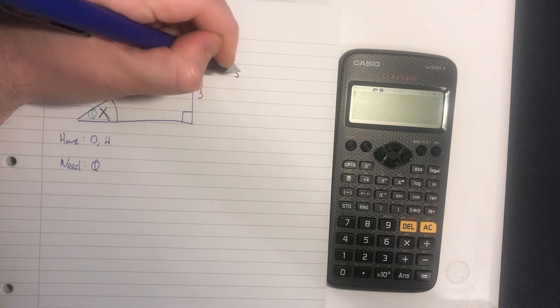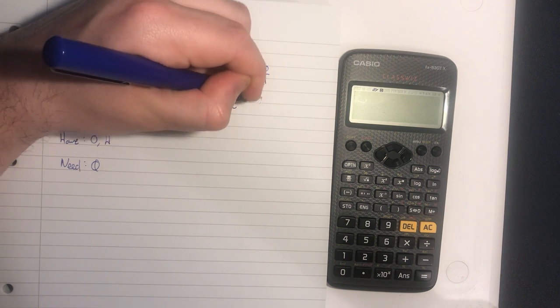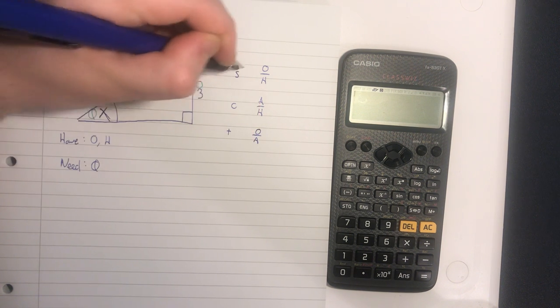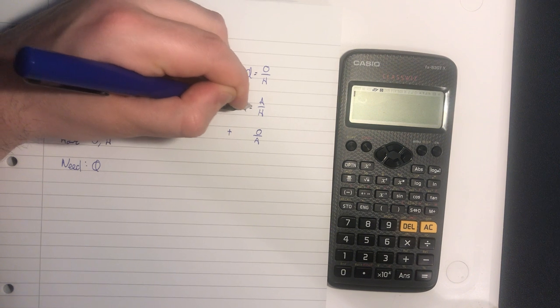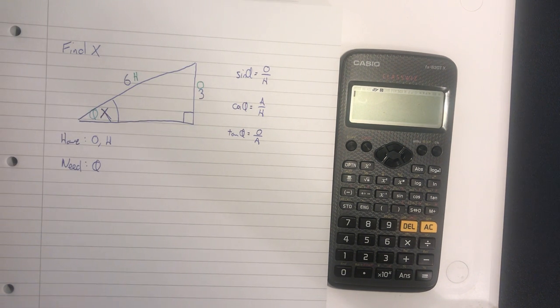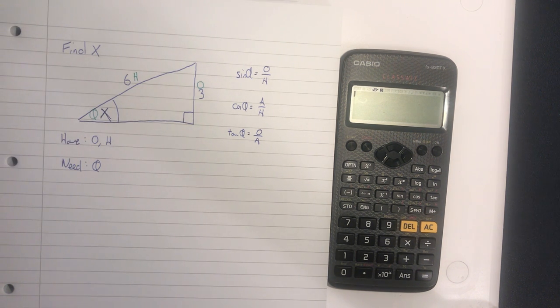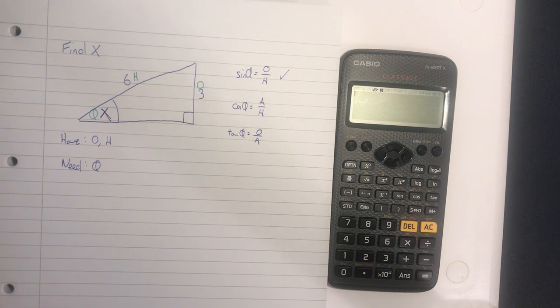We know we're going to use SOH CAH TOA - silly old Hitler couldn't advance his troops over Africa - and that's sine theta equals O over H, cos theta equals A over H, tan theta equals O over A. We decide we're going to use one of these three things, and the one we're going to use is sine, because it has O, H, and theta.